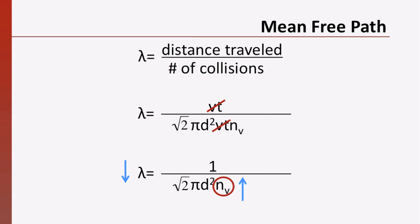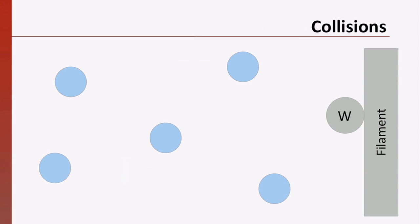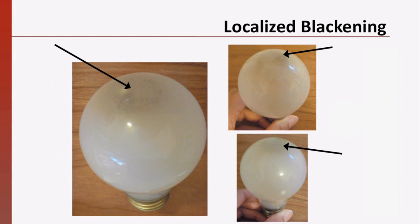Decreasing a tungsten atom's mean free path is desirable. While some vaporized tungsten atoms will still condense on the walls of the light bulb, some collisions will result in tungsten atoms recondensing on the filament. You may have noticed blackening near the top of incandescent light bulbs after they've been used for a while.